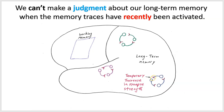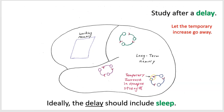So what do we do? How do we test the strength of memory traces in a dormant state? We have to study after a delay — we must let the temporary increase go away. Ideally the delay should include sleep. When we study each day we create long delays, which guarantees that when we study next time and try to retrieve information, we're working with dormant cortical memory traces.